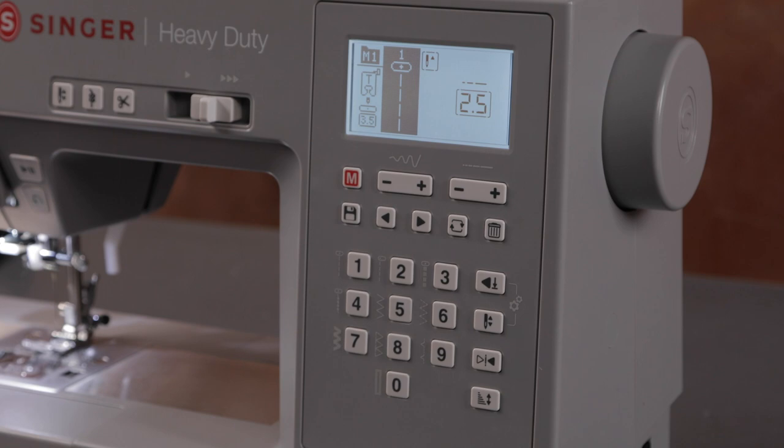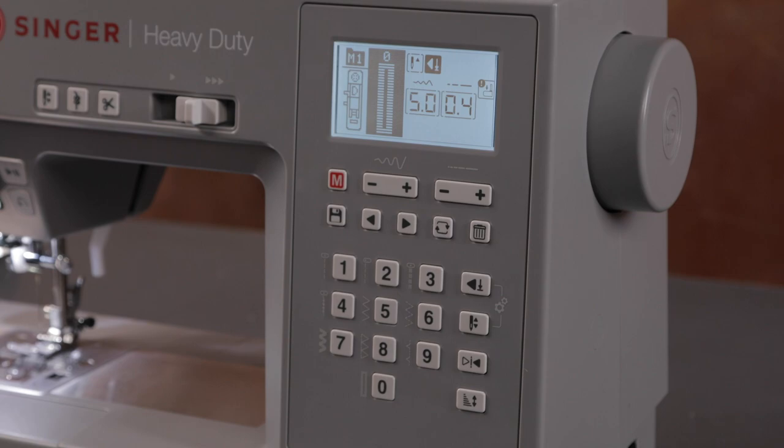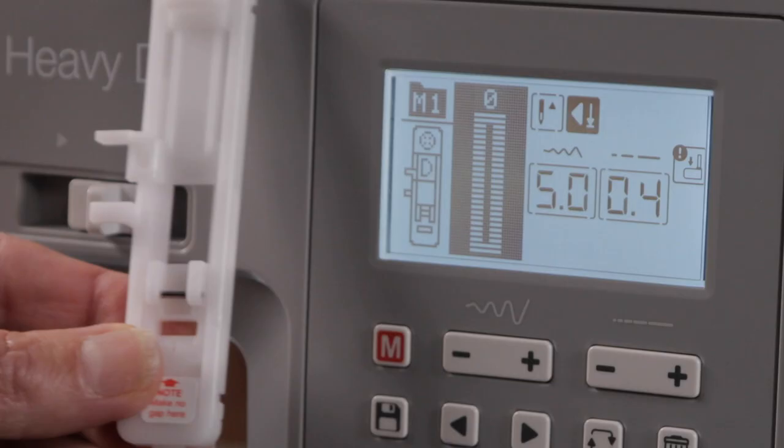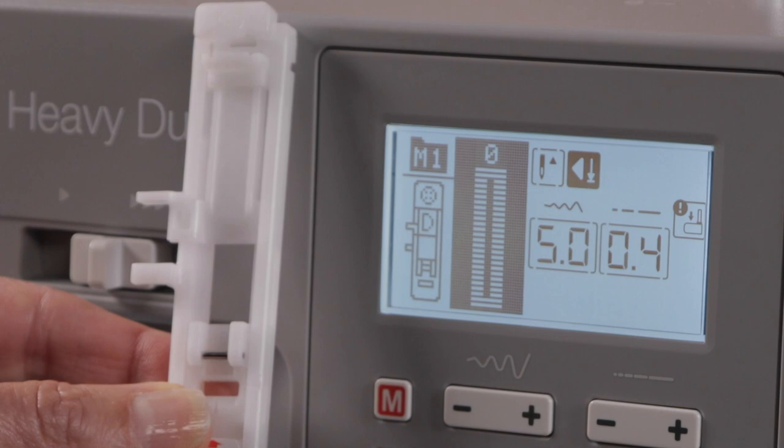To show how to sew a buttonhole I'm going to use the basic bar tack buttonhole and press this button here to select it. And up on my screen I can see I need buttonhole foot D.